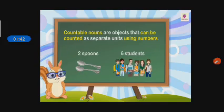Countable nouns are objects that can be counted as separate units using numbers. Whenever we want to count something, first of all we have to use the numbers to count it. For example: one, two — two spoons. One, two, three, four, five, six — six students. We use numbers to count them.